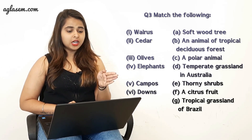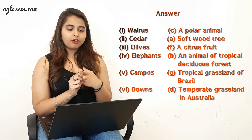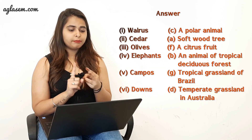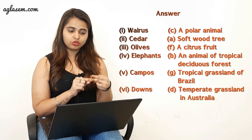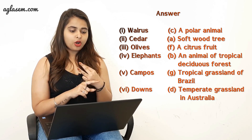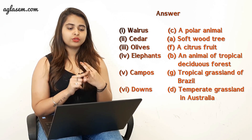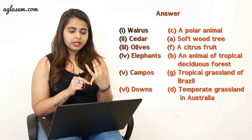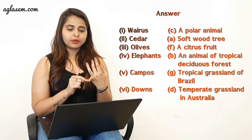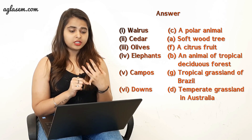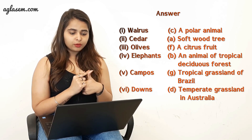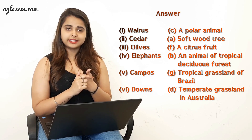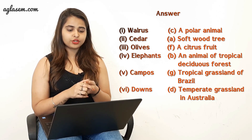Question three is match the following. The answers are: walrus is connected to 'a polar animal'; cedar is connected to 'a softwood tree'; olive is connected to 'a citrus fruit'; elephant is connected to 'an animal of tropical deciduous forest'; campos is connected to 'tropical grassland of Brazil'; and downs is connected to 'temperate grassland in Australia'.